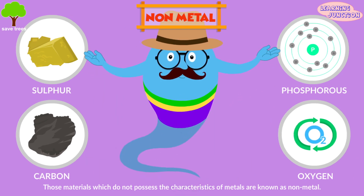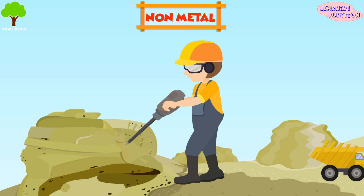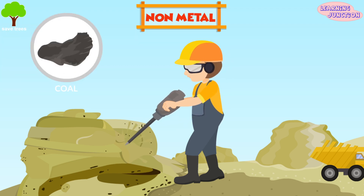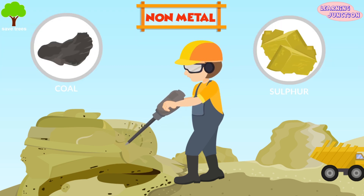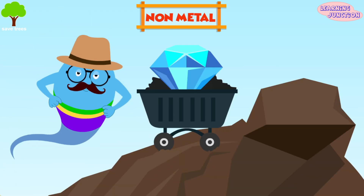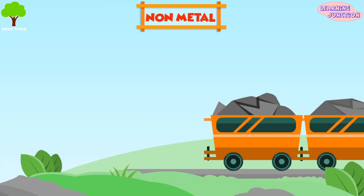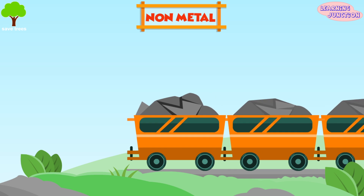Now the physical properties of non-metals. Brittle or soft — the solid non-metals are brittle or soft as they can be broken down into a powdery substance on tapping. Examples are coal and sulfur. But diamond is an exception — it is the hardest non-metal. Non-metals are bad conductors of electricity and heat, except graphite.